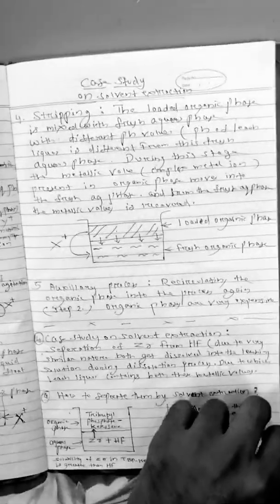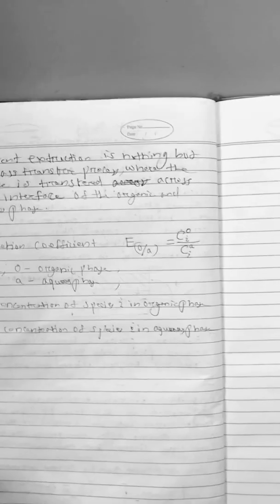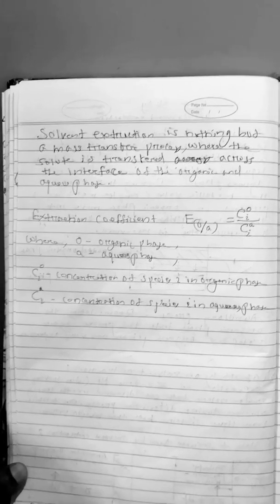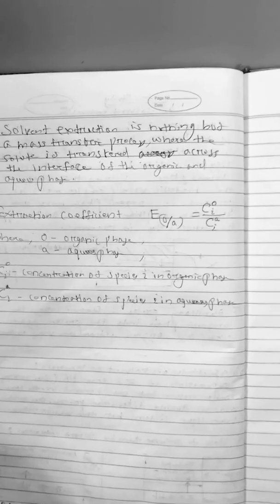Next we'll discuss an important part that is the extraction coefficient. So solvent extraction is nothing but a mass transfer process where the solute is transferred across the interface of the organic and aqueous phase. So extraction coefficient is C i organic by C i aqueous where O is the organic phase, A is the aqueous phase.